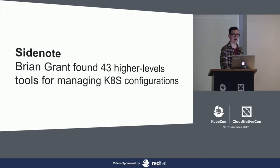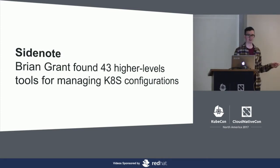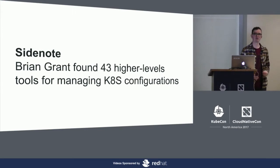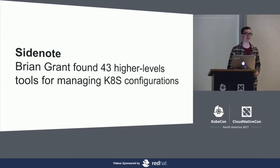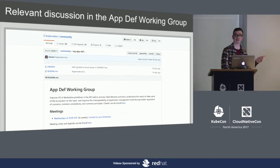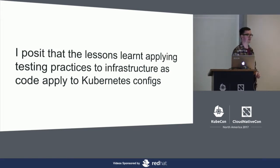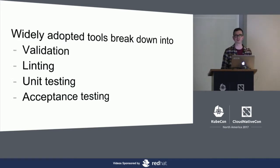There are loads of those tools about. Brian Grant, as part of the Application Definition Working Group, went out and found a list of 43. That number points to people with a real challenge, a problem. And I don't think there's one answer. If you're interested in that, come join the Application Definition Working Group that's starting to get going. The crux of this talk is that I posit the lessons learned applying testing practices to infrastructure as code apply and will increasingly apply to Kubernetes configurations, and I want to talk about concrete examples of tools you can use today — particularly to help you scale Kubernetes across teams and organizations.